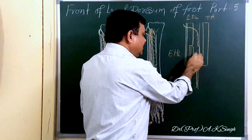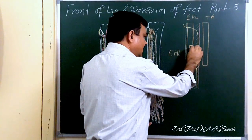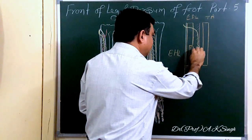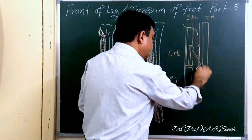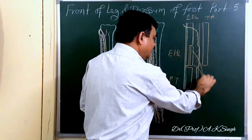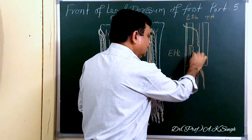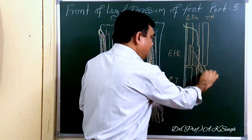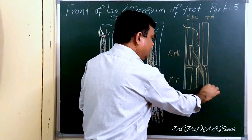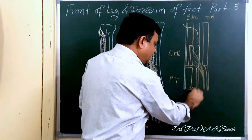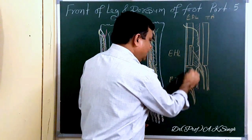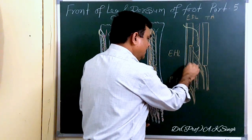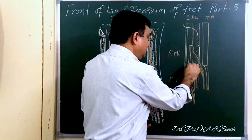The extensor hallucis longus muscle crosses from the lateral to the medial side. Here is tibialis anterior, here is peroneus tertius, and here is the position of extensor digitorum longus.